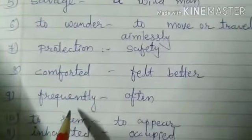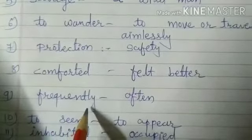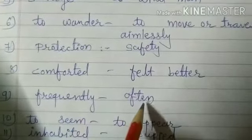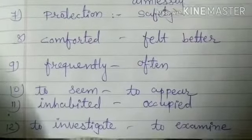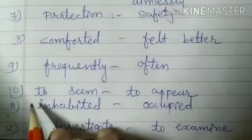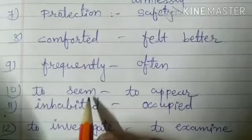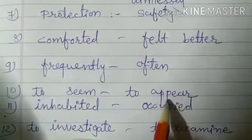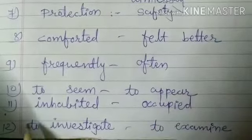Number 9: frequently. Frequently ka meaning hota hai often — yani baar baar. Number 10: to seem. To seem ka meaning hota hai to appear — appear, yani dekhna.